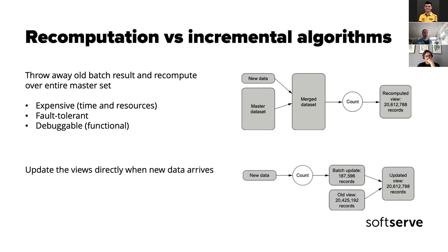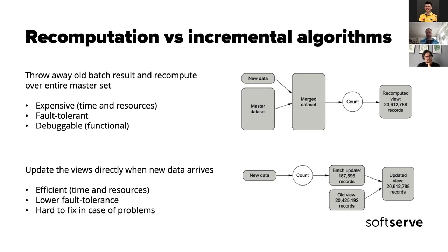Incremental algorithms, on the other hand, work only on new data. Each time we get new data we process it, add the outcome to the previous output, and this becomes our updated view. This is efficient in both time and resources — much quicker, uses fewer resources — but it has lower fault tolerance and in some cases is really hard to fix.